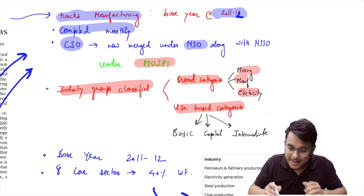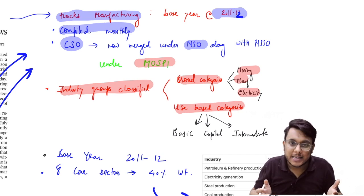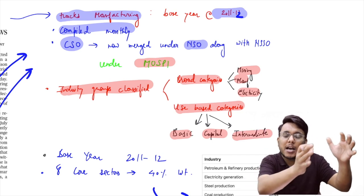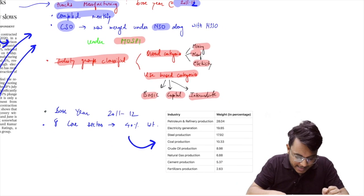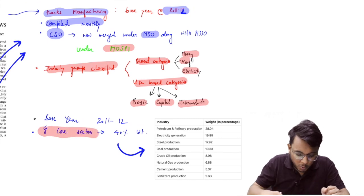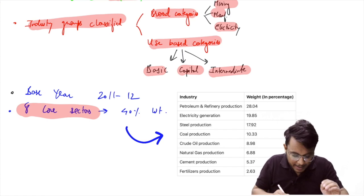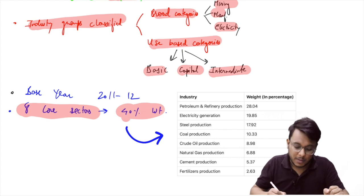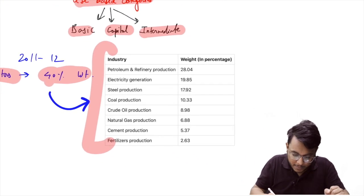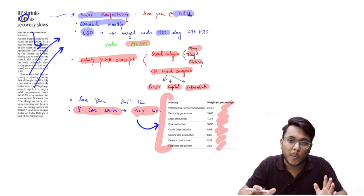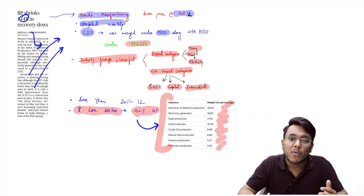The NSO is under the Ministry of Statistics and Programme Implementation. Under IIP, industry groups are classified under two broad categories: broad categories — mining industries clubbed together, manufacturing industries clubbed together, electricity as a single category — and use-based categories, such as industries providing basic goods, capital goods, machinery, and intermediate goods. The base year is 2011–12. The eight core sectors hold 40 percent of the IIP's weight: petroleum and refinery, electricity, steel, coal, crude natural gas, cement, and fertilizer.